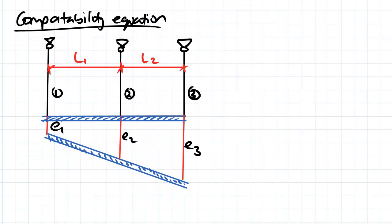To look at the compatibility equation, we're going to have a look at a rigid beam here. Under some loading, if it undergoes deflection and a slope, there's going to be a relationship between these deflections at certain points: e1, e2, and e3.